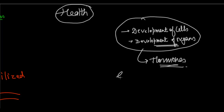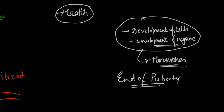Until puberty ends and full sexual maturity is achieved, we cannot say that a person is ready to reproduce and give birth to children, because children are a major responsibility. The young generation sometimes doesn't think of the repercussions and they go into sexual intercourse and unsafe sexual contact, which is very dangerous — not only from a health point of view but also from a moral point of view, because you will have the big responsibility of a child if the woman falls pregnant.